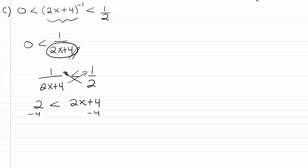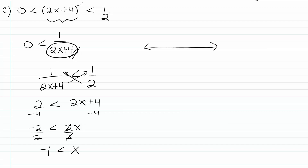Solving by subtracting 4 from both sides, we get negative 2 is less than 2x. Dividing both sides by 2, we end up with x greater than negative 1. On a graph, negative 1 is the boundary and x values are above that, going all the way up to positive infinity. Our solution in interval notation is from negative 1 to positive infinity.